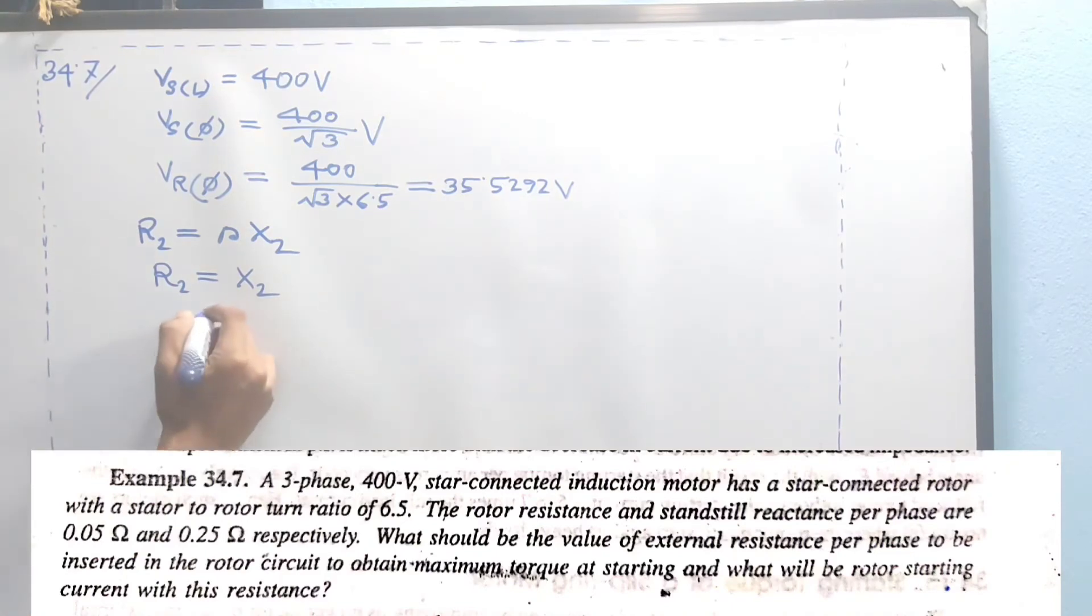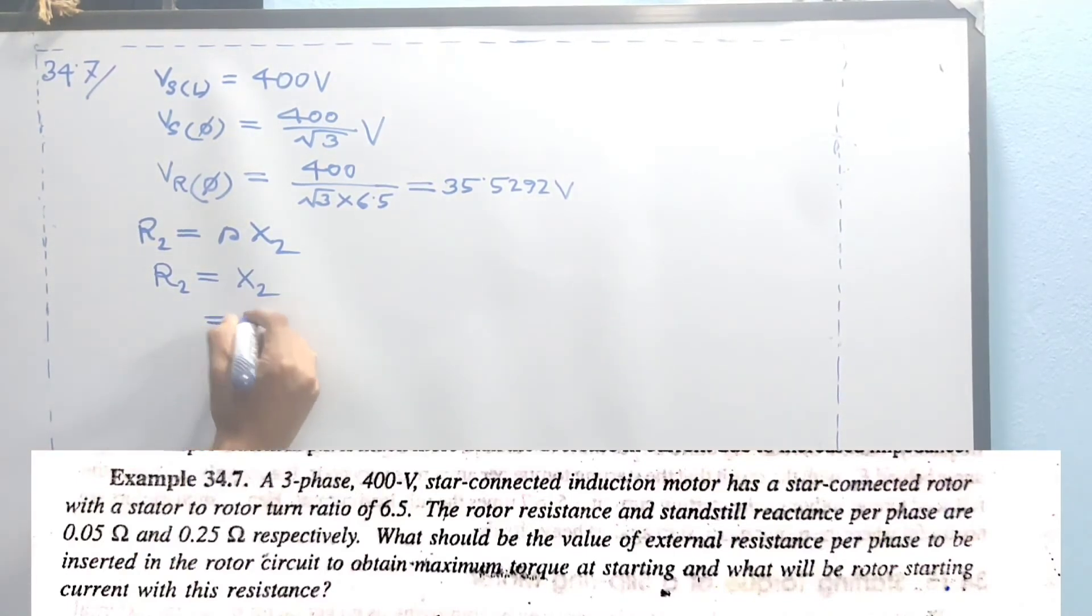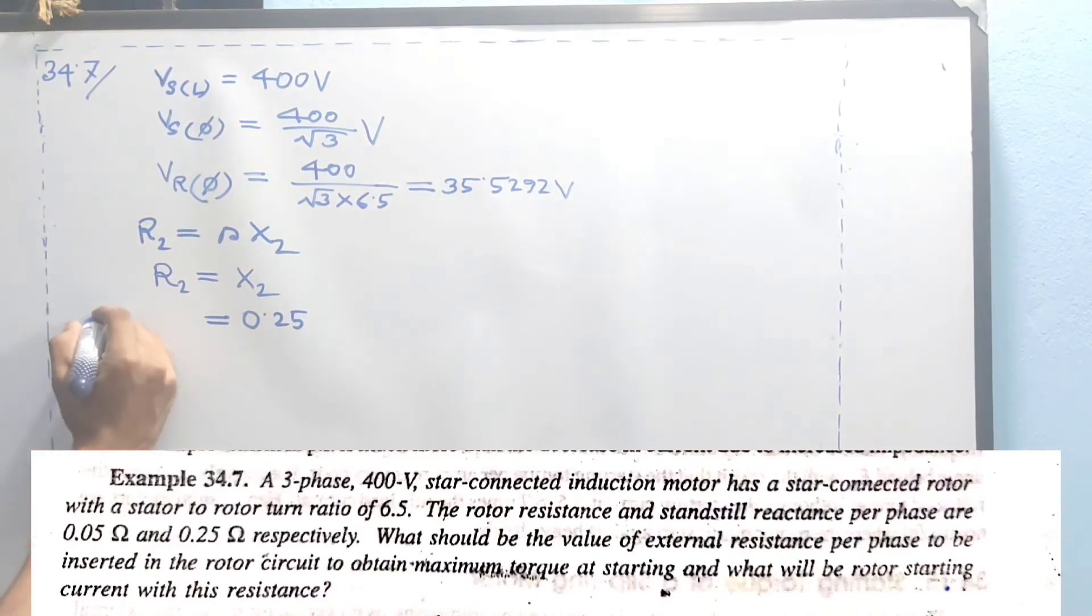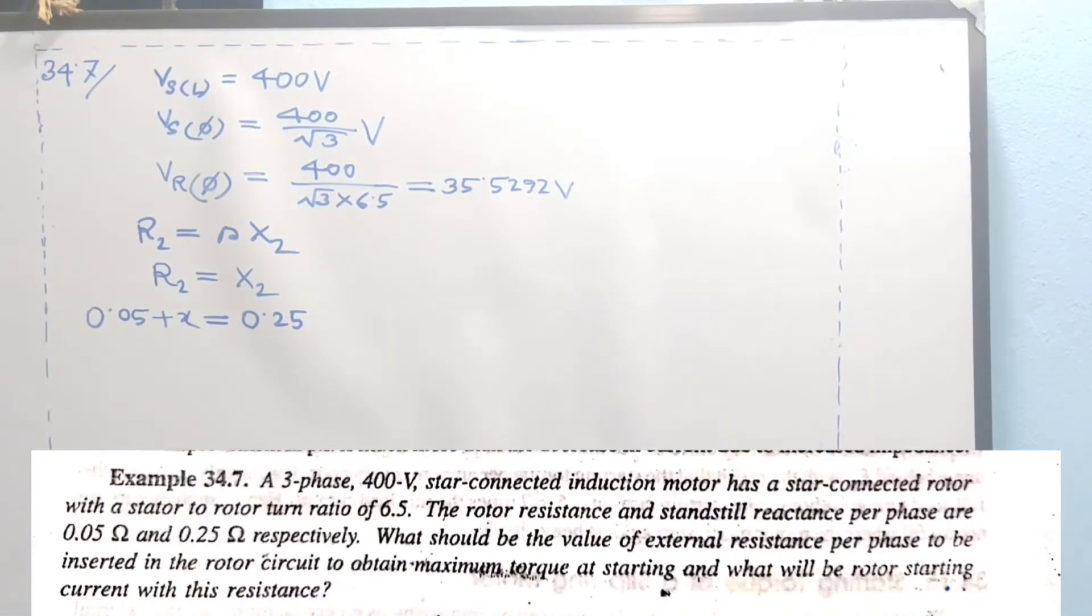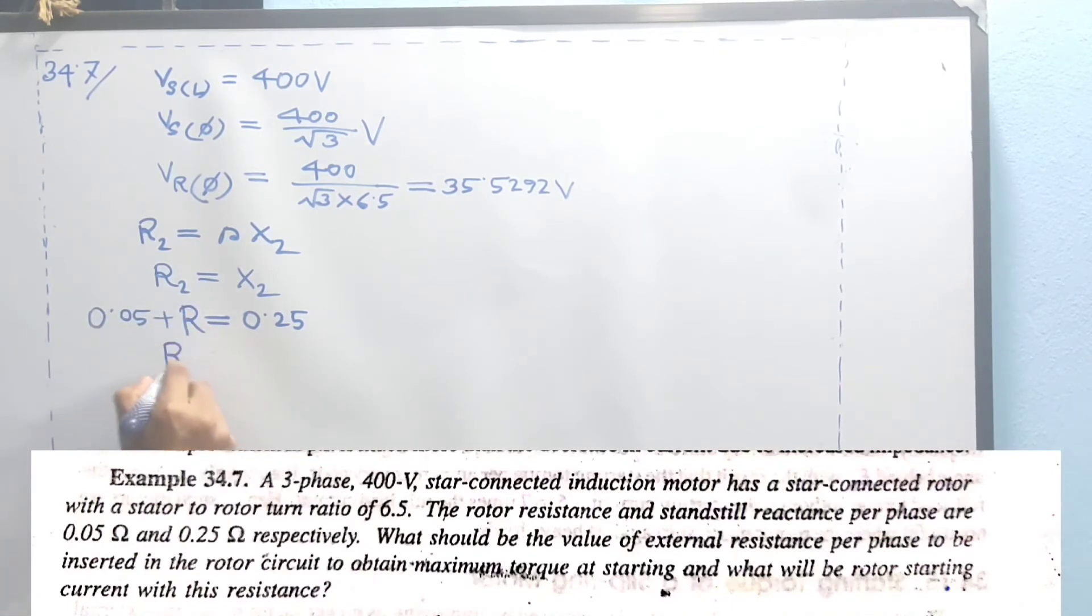The value of X2 is 0.25. In the initial condition, the rotor resistance is 0.05 ohm. So if the total resistance should equal X2, we have R2 plus R_external equals X2. Therefore, R_external equals 0.25 minus 0.05 equals 0.2 ohm.